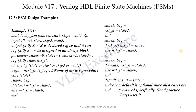Now let's see the Verilog HDL coding of this FSM, following the standard FSM design methodology with three procedural blocks: next state logic, present state logic, and output logic. The module has input ports clk, reset, start, skip3, and wait3, and a 3-bit output Z. Z is declared as a register type variable because the output logic is coded using a procedural block, where only register type variables can appear on the left-hand side of assignments.